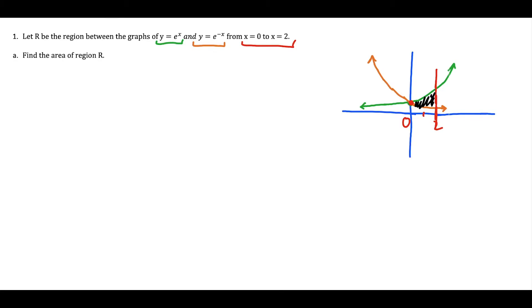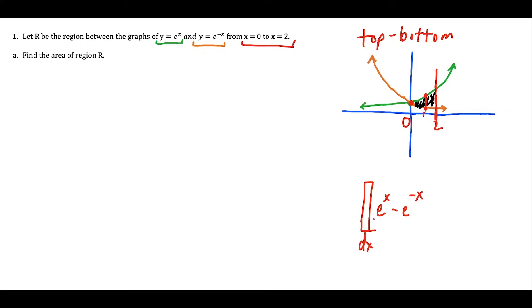To find the area of region R, the cross sections involved are rectangles. We take a single vertical cross section and make it into a rectangle. The width is dx — these slices are infinitely thin. The height is described by top minus bottom: we take the equation on top, y equals e to the x, and subtract the equation on bottom, y equals e to the negative x. This gives us one slice of area, dA, equal to e to the x minus e to the negative x times dx.